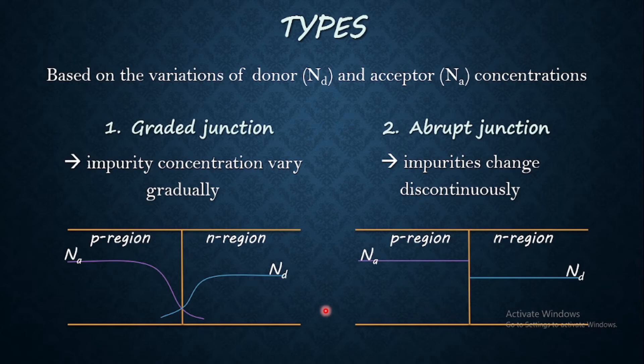But one thing we need to note is that one cannot manufacture a strictly abrupt junction. Because the impurities will tend to diffuse across the junction to some extent. So we will be generally having the graded junctions itself. But for simplifying our studies, we will consider only the abrupt junction. Because we can then illustrate the physical phenomena without any extra mathematical complications which are not so essential.